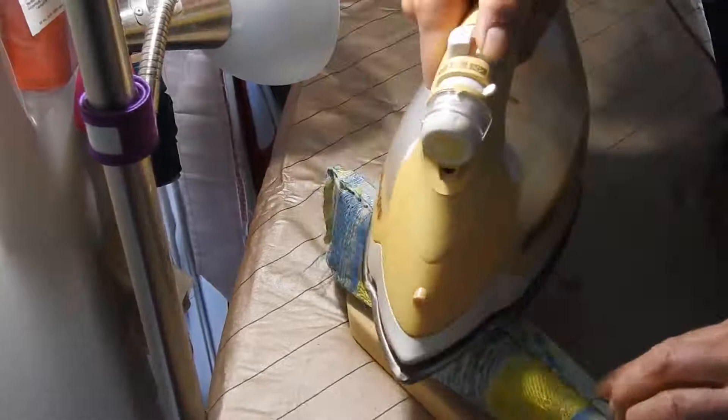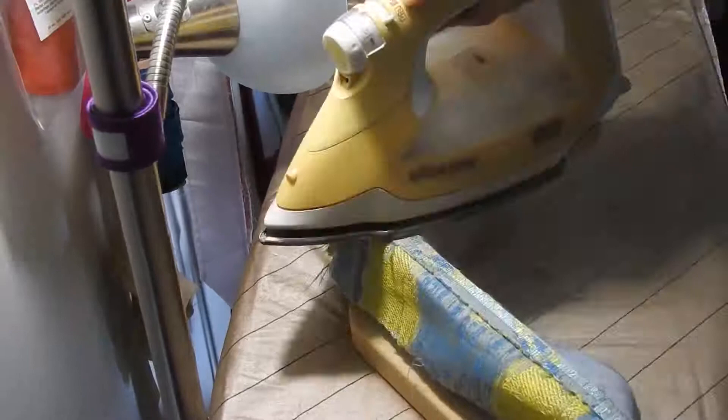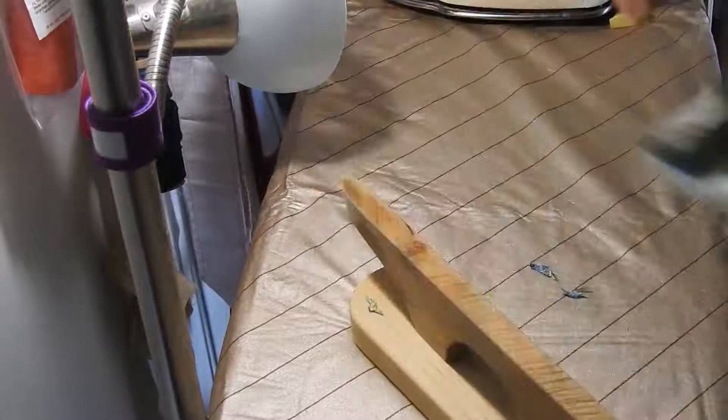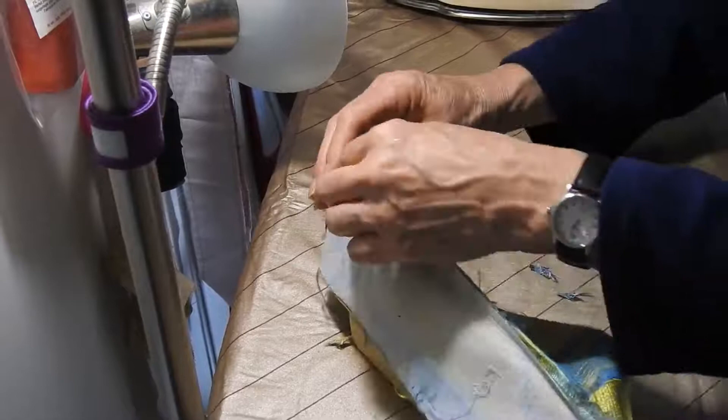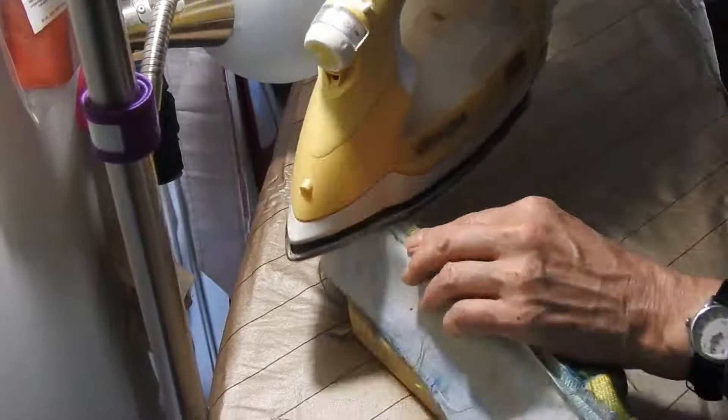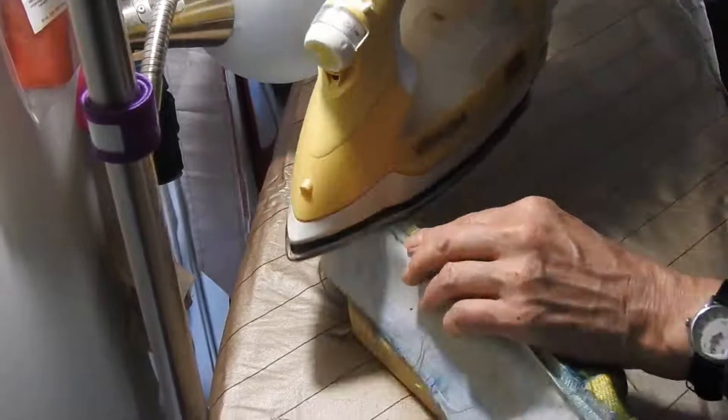Repeat the process there. Now as my seams are pressed open, now it's just a matter of taking this corner and turning it. There's no bulky seam there at all. Lay it down on the ironing board with the interfacing side up.